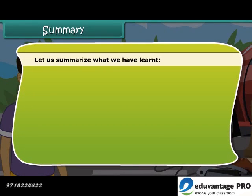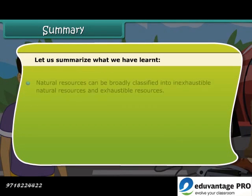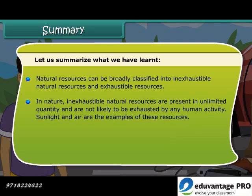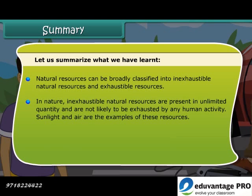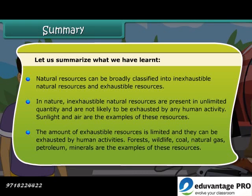Friends, let's summarize what we have learned. Natural resources can be broadly classified into inexhaustible and exhaustible resources. Inexhaustible natural resources are present in unlimited quantity and are not likely to be exhausted by any human activity — sunlight and air are examples. The amount of exhaustible resources is limited and they can be exhausted by human activities. Forests, wildlife, coal, natural gas, petroleum and minerals are examples of exhaustible resources.